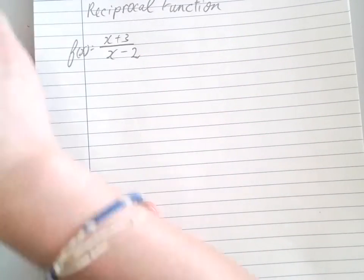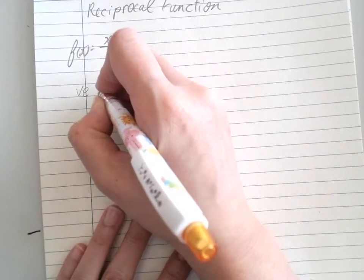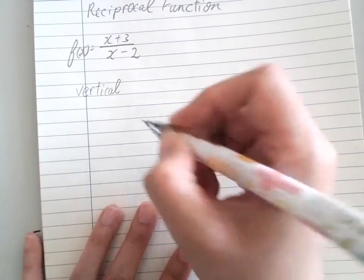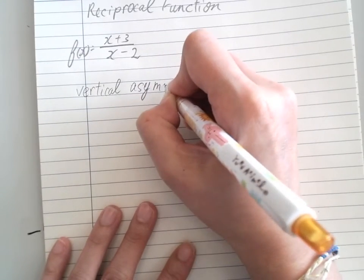Vertical asymptote is nice and easy, which actually helps you with the domain and range.